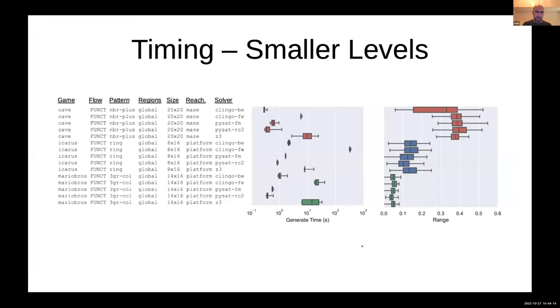This is some timing information. This is the time to generate the levels from I think 25 examples and a rough metric of the difference between the levels. This is looking at the cave game, Kid Icarus and Super Mario Brothers and five different solvers.